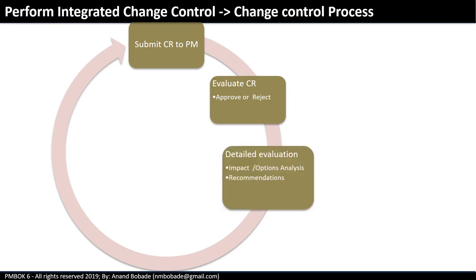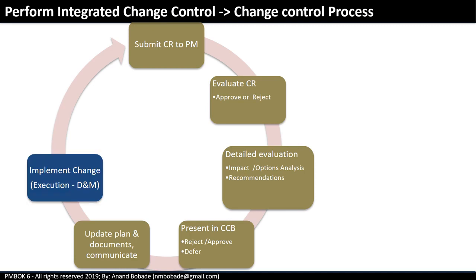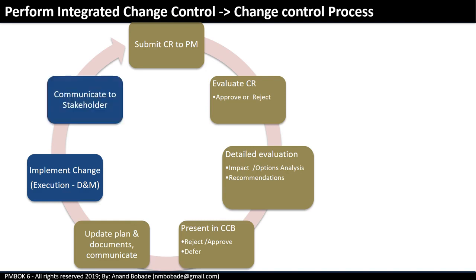The project manager with the help of the project team will perform detailed analysis, which may include integrated impact on other areas and recommendations. The change request will then be presented to the change control board. The CCB is responsible for reviewing, evaluating, approving, or rejecting changes. The CCB may request additional information or put the change request on hold. Once approved, the project manager updates the project management plan, subsidiary plans, or baselines and communicates decisions to stakeholders. Approved changes are implemented through the Direct and Manage Project Work process, and completion is communicated to relevant stakeholders.